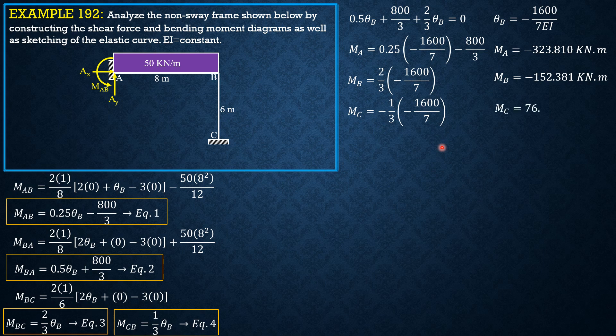We then compute the vertical reactions. MC is one-third of θB, so MC equals 76.19 kilonewton-meters. It is the negative of MCB, that's MC, so 76.19 kilonewton-meters.